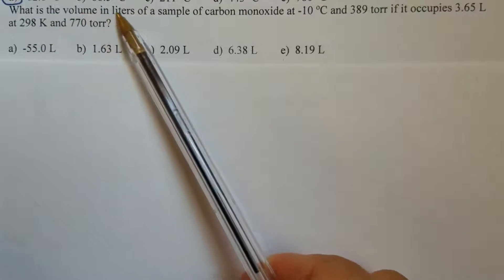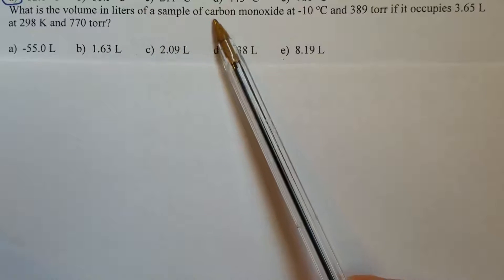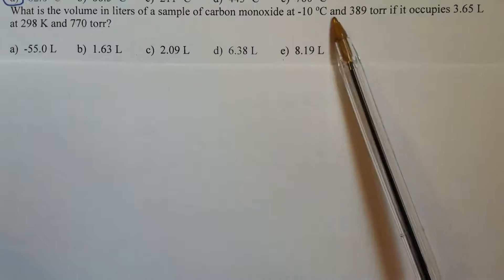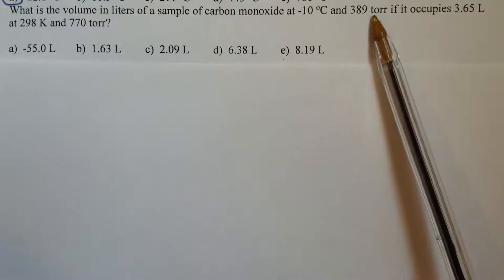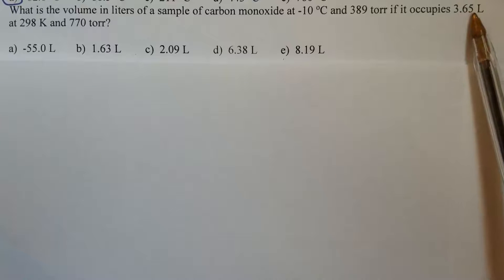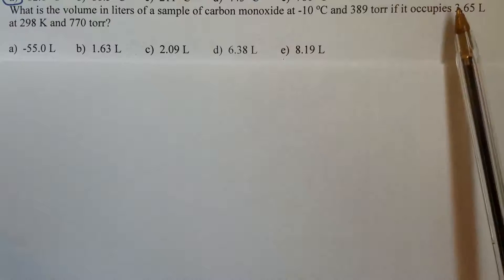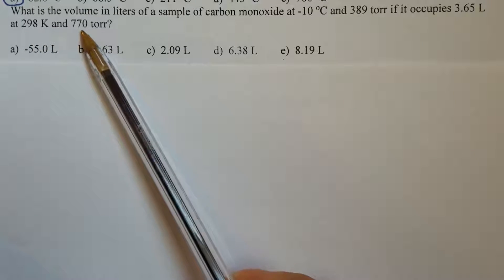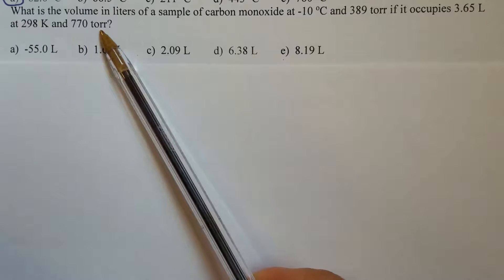What is the volume in liters of a sample of carbon monoxide at minus 10 degrees Celsius and 389 torr if it occupies 3.65 liters at 298 Kelvin and 770 torr?